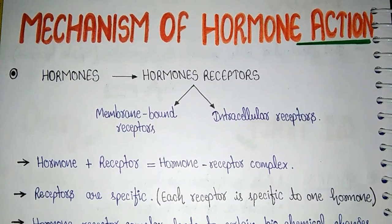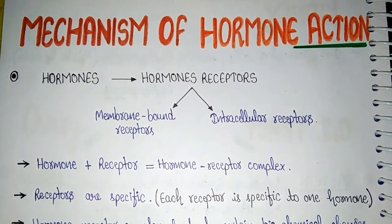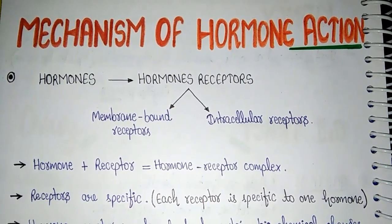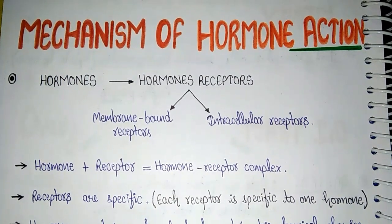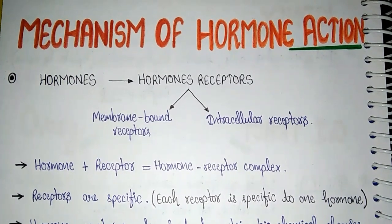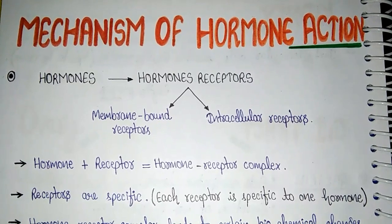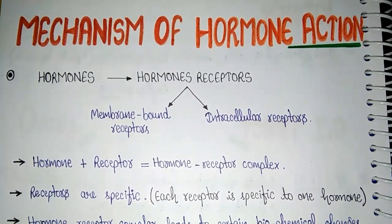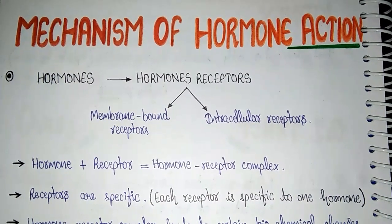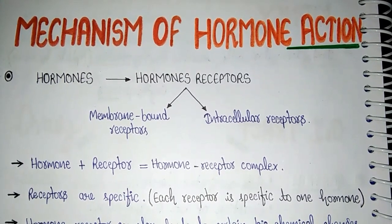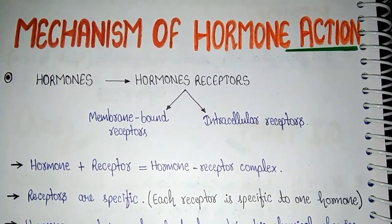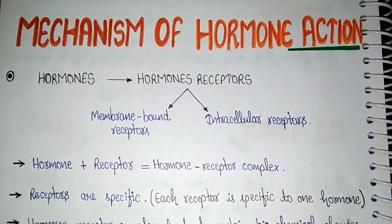Ab receptors hamare do tarah ke hote hai: membrane bound receptor and intracellular receptor. Membrane bound receptors woh receptors hote hai jo cell membrane ke upar present hote hai. Wahi agar intracellular receptor ki baat ki jaye, toh yeh aise receptors hai jo cell ke andar present hote hai, ya keh sakte hai ki nuclear membrane par present hote hai. Ab hormone receptors lock and key ki tarah work karte hai. Jab hormone receptor ke saath bind hote hai, toh yeh complex banate hai jo lock and key ki tarah kaam karta hai. Usko kehete hai hormone receptor complex. Jab yeh hormone receptor complex ban jaata hai, uske baad jo particular function hai hormone ka, woh action cause karta hai.